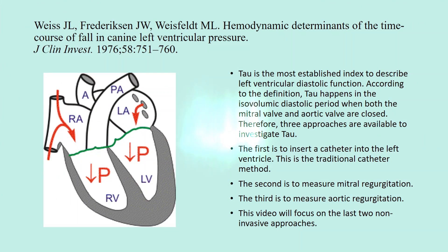Tau is the most established index to describe left ventricular diastolic function. According to the definition, tau occurs in the isovolumic diastolic period when both the mitral valve and aortic valve are closed. Therefore, three approaches are available to investigate tau.